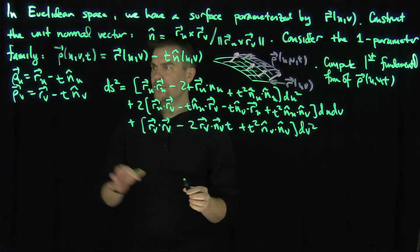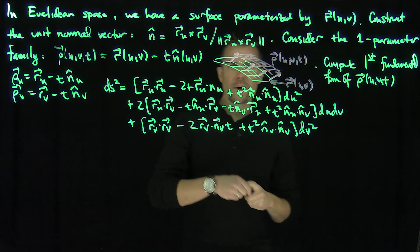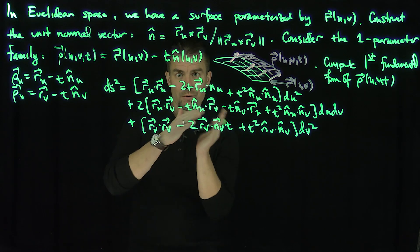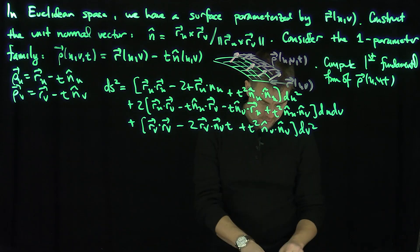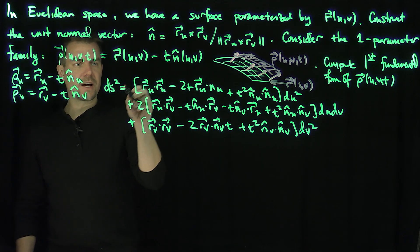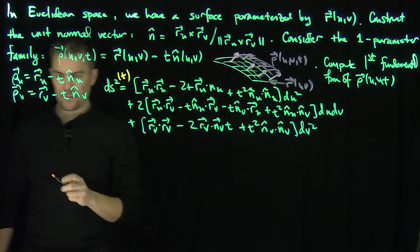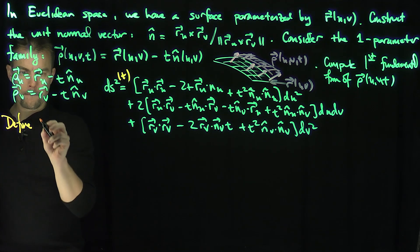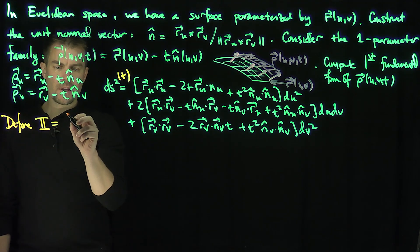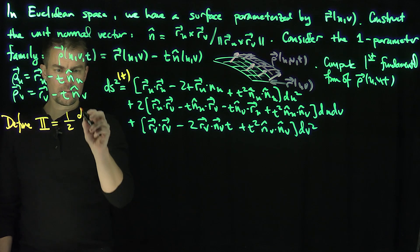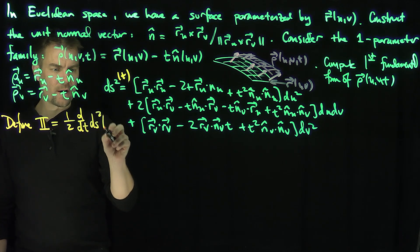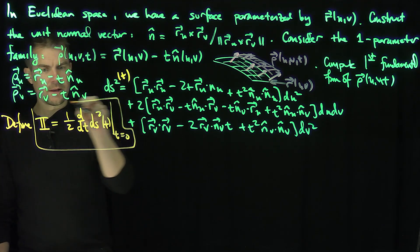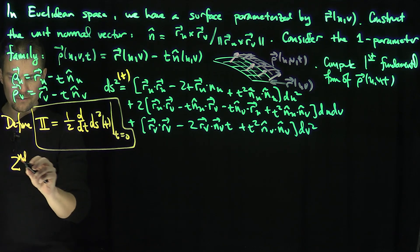This is the metric tensor for these shifted surfaces. I want to find a measure of curvature — how much these first fundamental forms, how much the arc lengths are changing as I take the derivative with respect to t. So I'll define the second fundamental form to be one half d by dt of ds squared of t, evaluated at t equals zero.